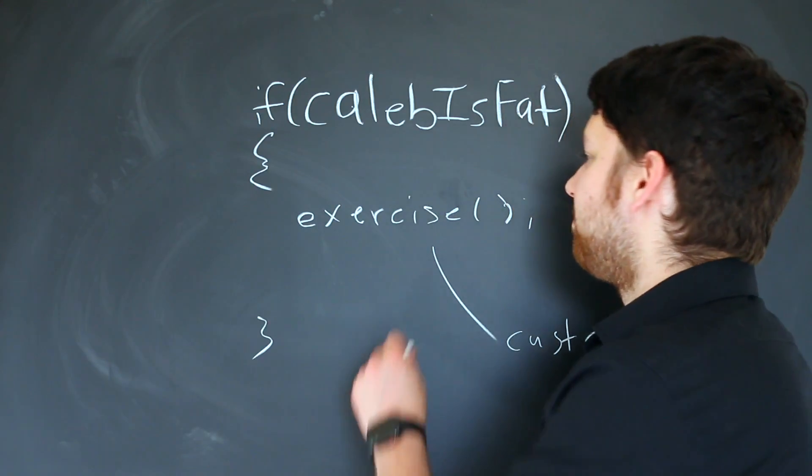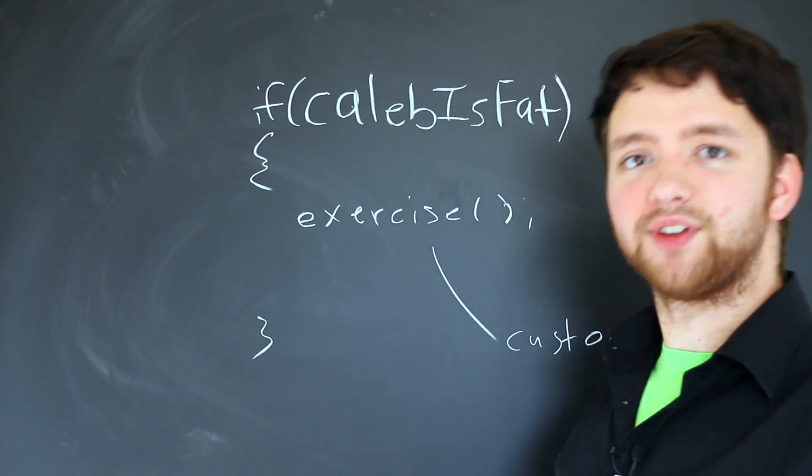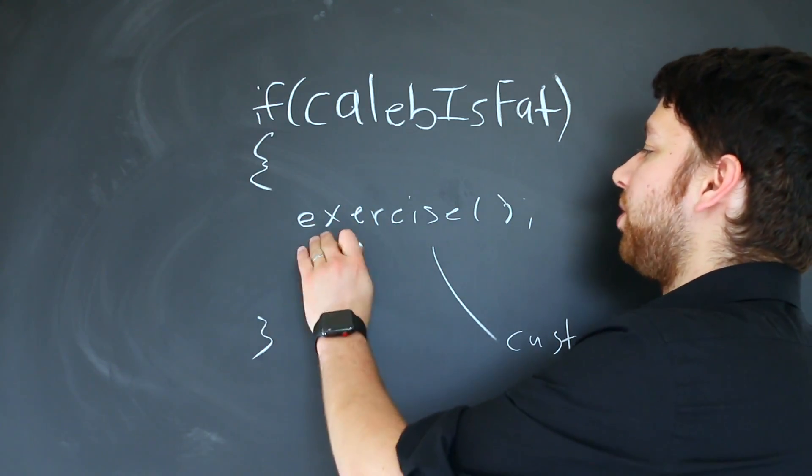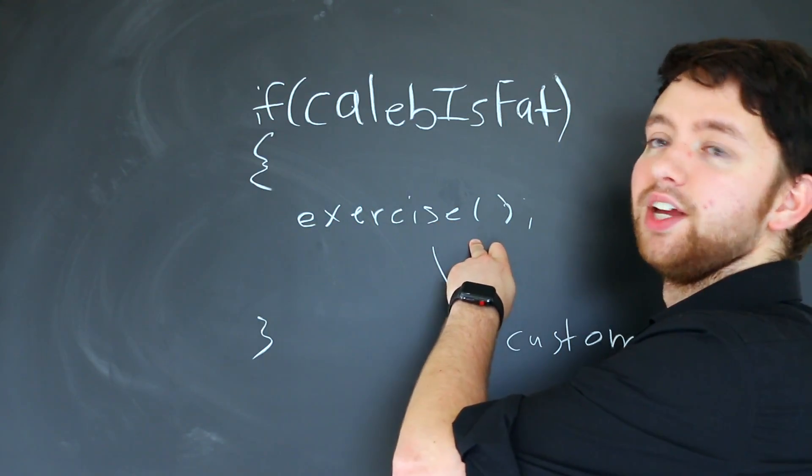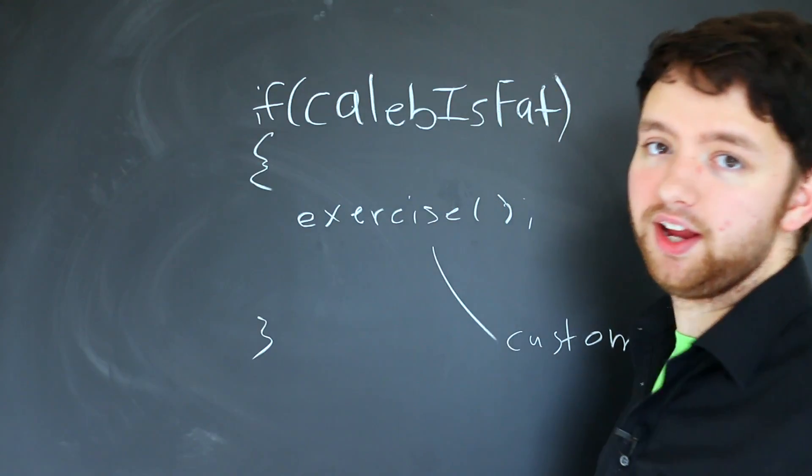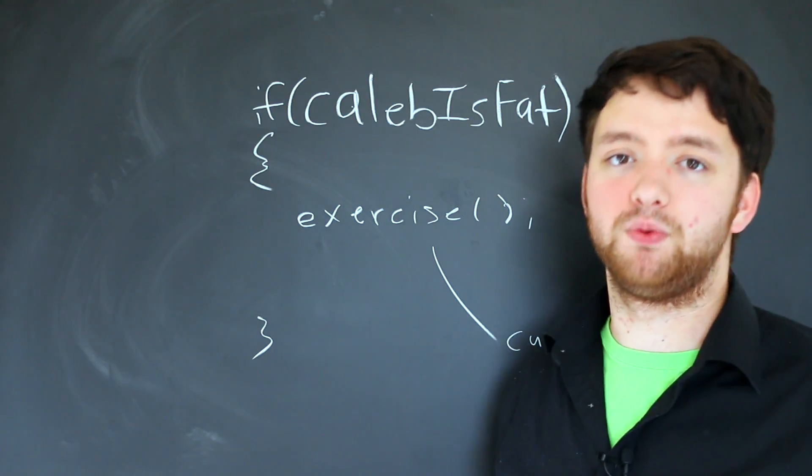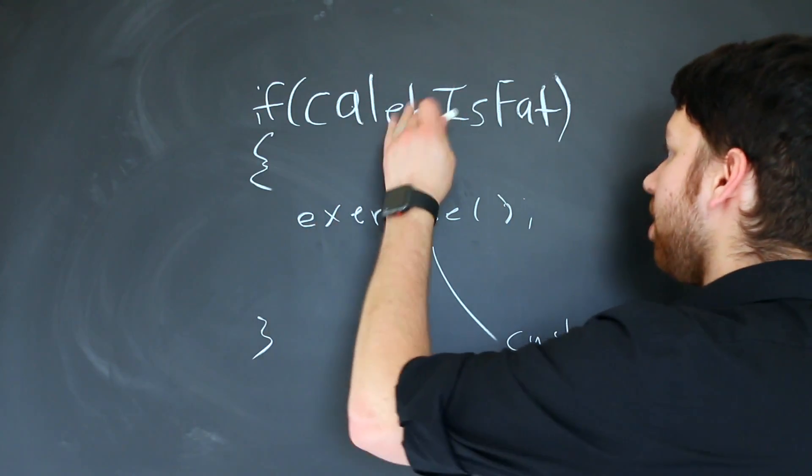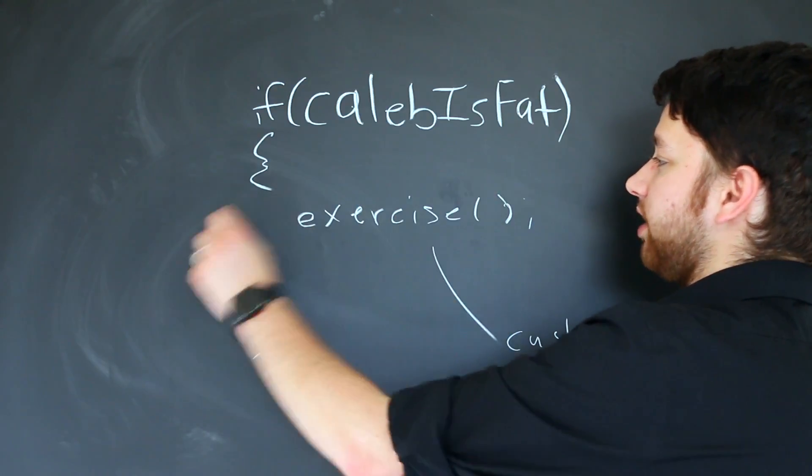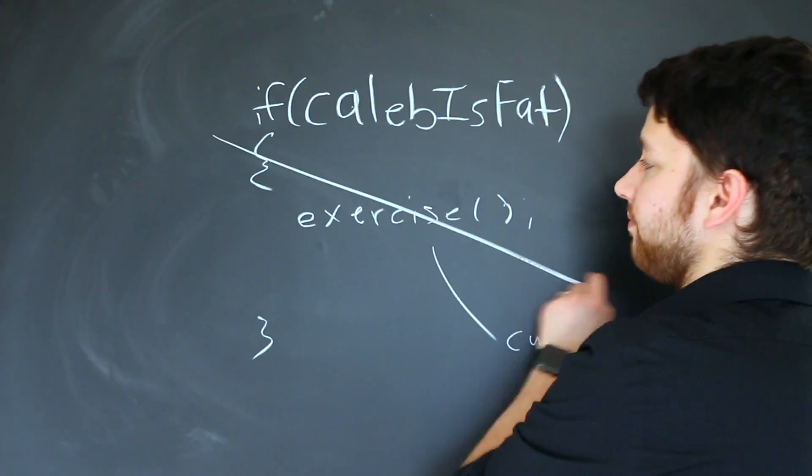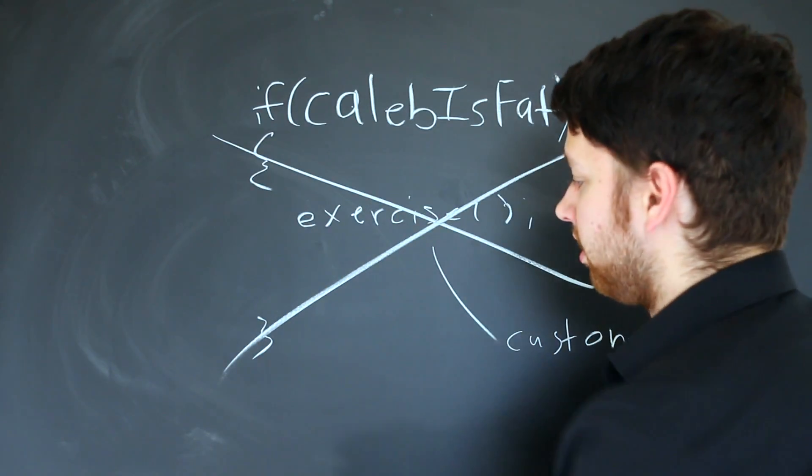So we only want the person to exercise if they're overweight. That's how an if statement works. If the person is not overweight, then this never gets executed. You can basically just pretend it's not even there and it will continue going down here.